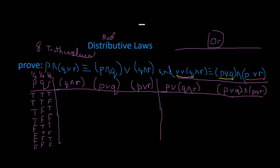In this video, we're going to prove the distributive law for the OR. Right here, we're going to have P or (Q and R). We're going to distribute the P to the Q, and then distribute the P to the R. That gives us two other compound statements, as you can see over here — one and two more compound statements.